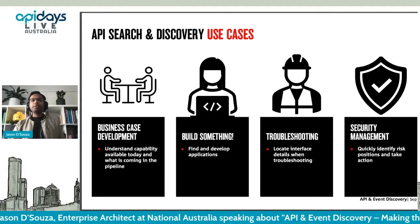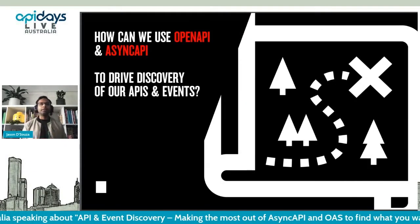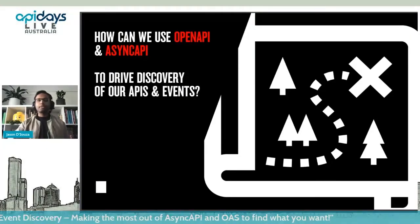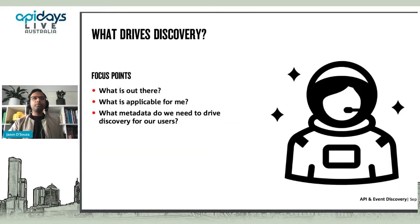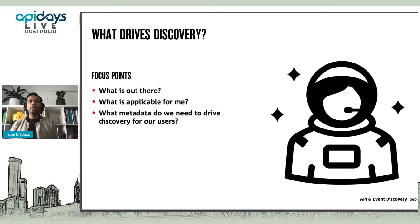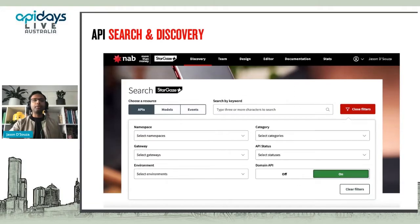Now that we have some use cases, how can we use OpenAPI and AsyncAPI to drive discovery of APIs and events? What drives discovery? It's all about the person and what they're trying to do. We need to think about what's out there for that person, what's applicable for them, and what metadata do we need to drive discovery for users. I'm going to show you our internal developer portal and some of the thinking we put into it.